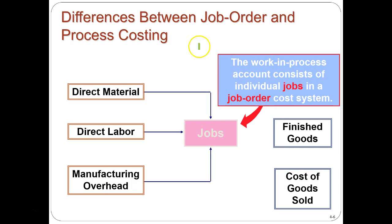Both job order and process costing involve making things — raw materials, direct labor, and manufacturing overhead flow from raw materials to work in process to finished goods, then to the consumer. When we think about a product like gasoline, much of the cost isn't just the raw material — a large portion comes from processing, refining, labor, and manufacturing overhead such as machine time.